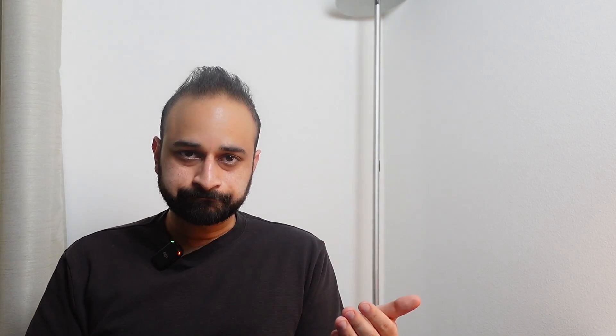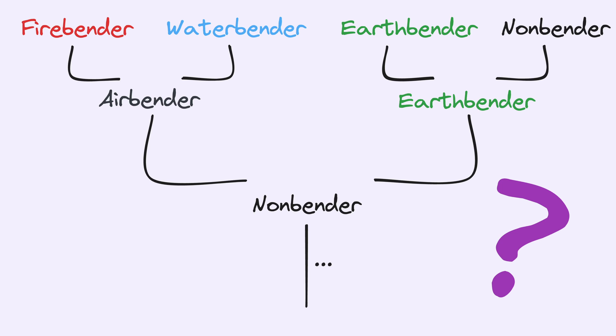But anyway, that's aside from the point. The reason I'm making this video is because there's been something that I've been thinking about for a really long time as it pertains to the Avatar The Last Airbender universe, and that is how do the genetics of deciding whether or not you're going to be a bender, and if you are a bender, what type of bender, which element you're actually going to bend, how does that all actually work? And so that's what I want to unpack in this video.